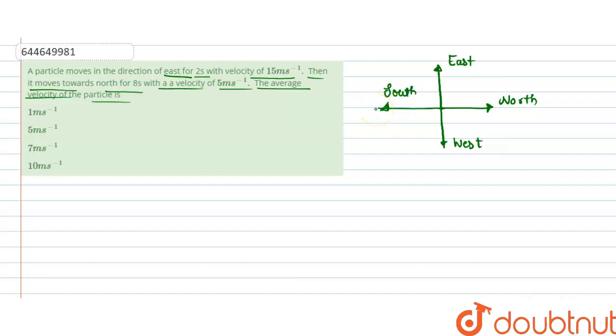The particle is moving east for 2 seconds with velocity 15 meter per second. And then it moves towards north for 8 seconds with velocity 5 meter per second.